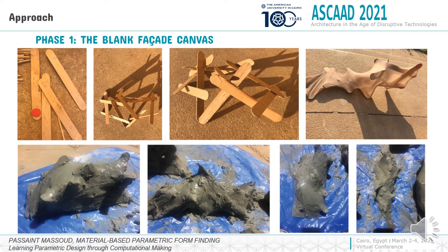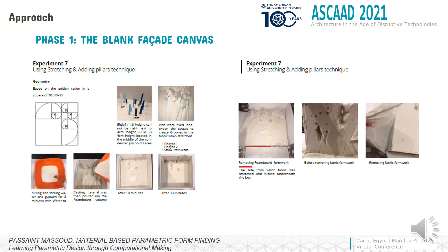The first phase, the blank facade canvas: students were asked to manually fabricate a prototype using two specific fabrication techniques — casting or fabric forming — using easily deformable material like gypsum. Students focused their inquiry on what can be learned from the interplay of materials, what different techniques can be implemented to experiment with these materials, and how these techniques can be utilized in form design innovation.